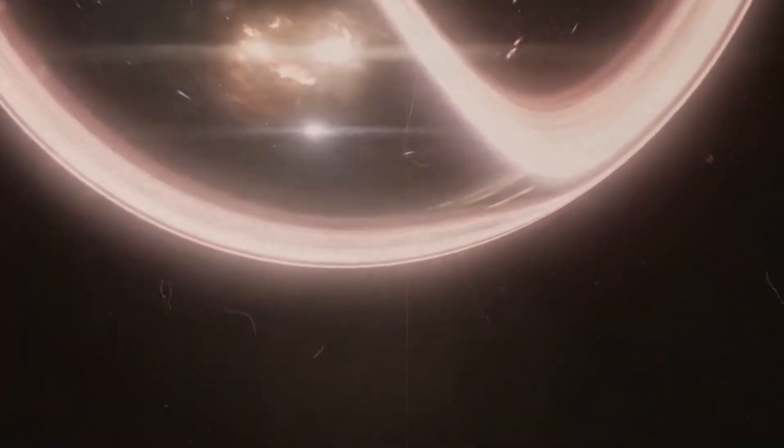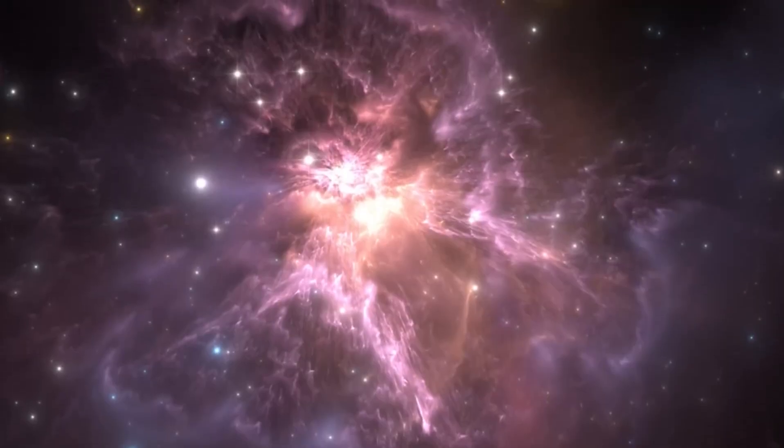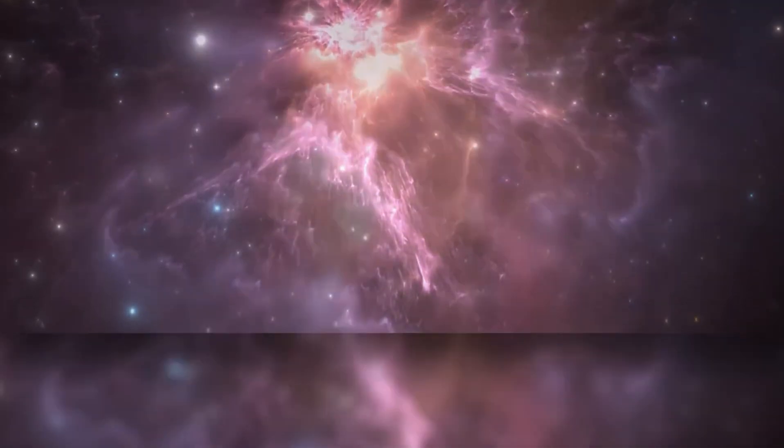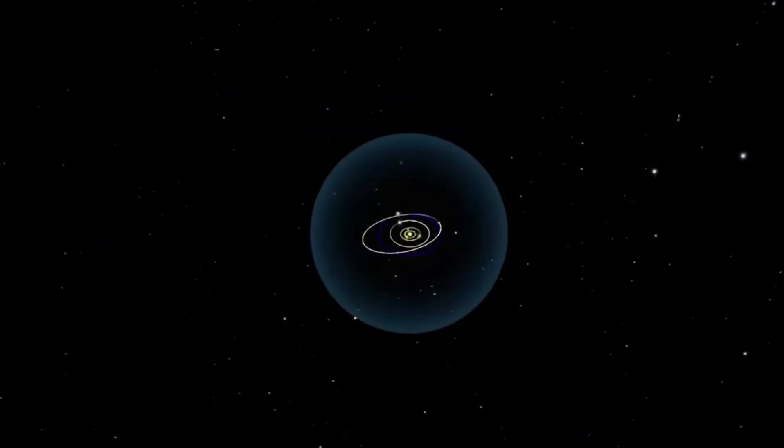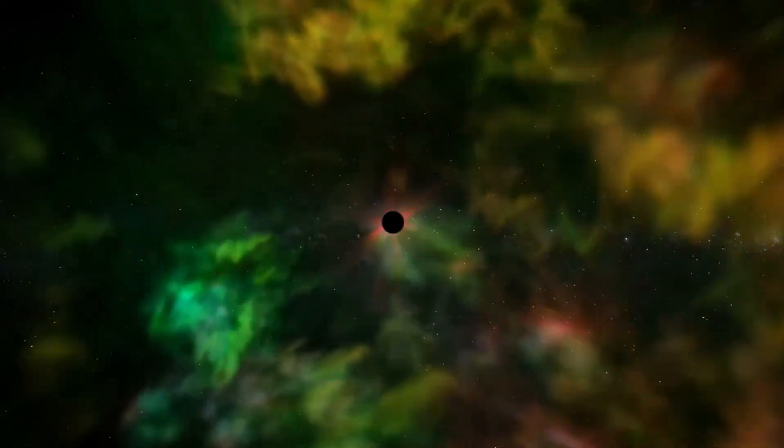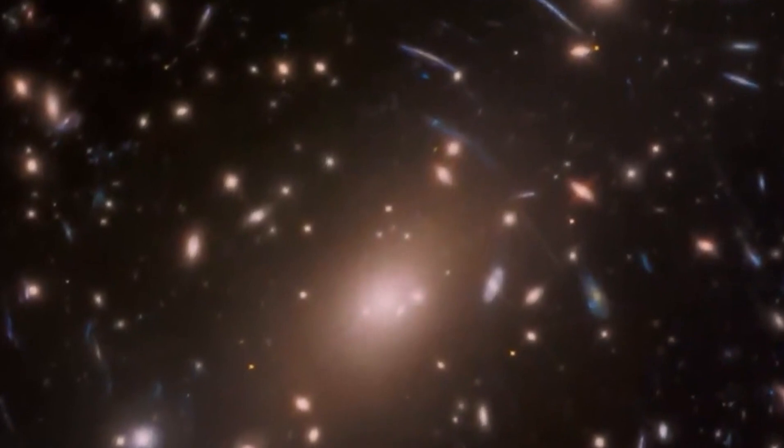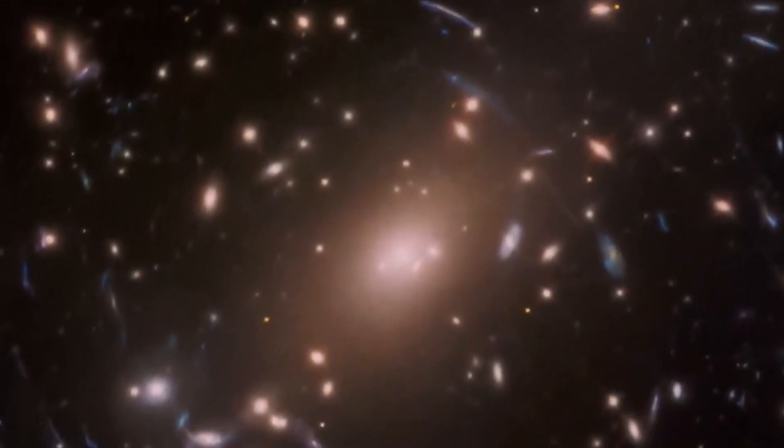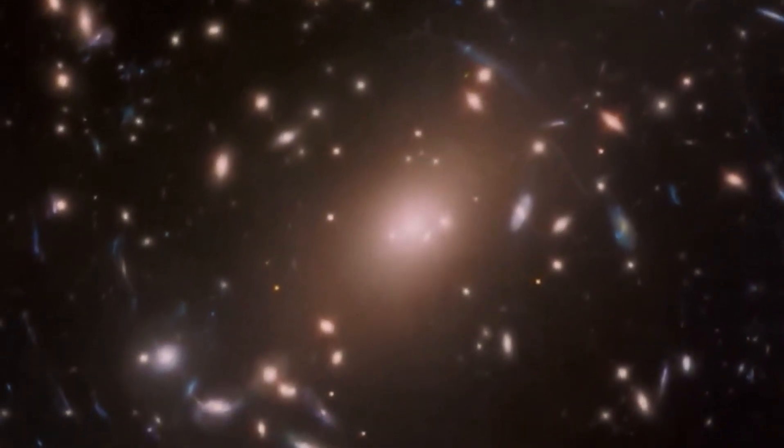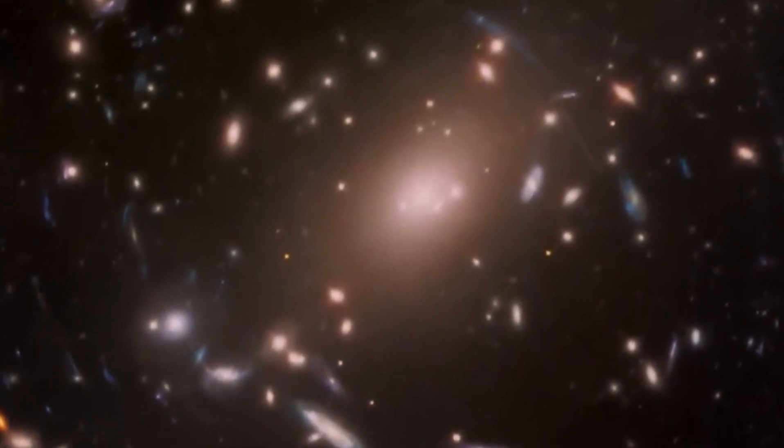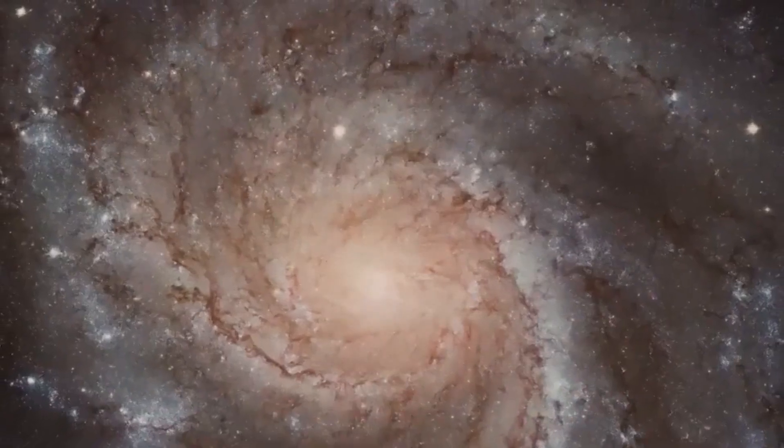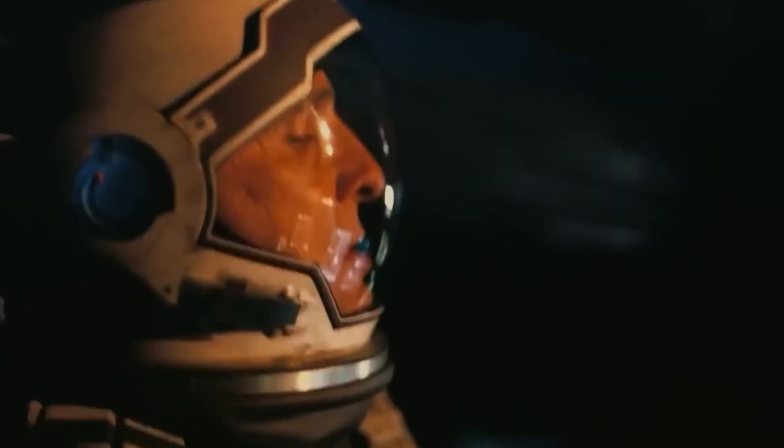Webb reminds us of how much we still don't understand about the cosmos. For example, dark energy and dark matter, which make up nearly all of the universe, remain enigmatic. The discoveries made by Webb challenged the standard model of cosmology, the leading theory about the universe's origins and composition, forcing astronomers to reconsider their understanding. While some galaxies seen by Webb align with predictions from standard model-guided simulations, others don't. Scientists are eagerly awaiting new spectroscopic data to refine their theories. It will likely take at least five years to adjust to the new universe revealed by JWST.